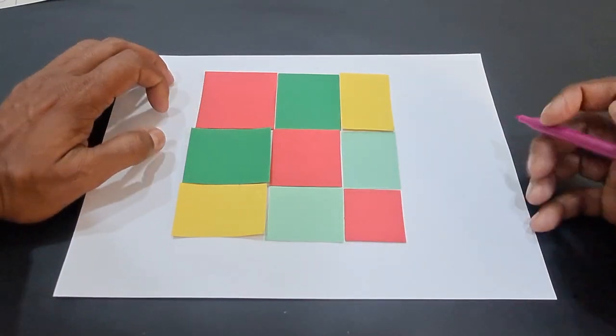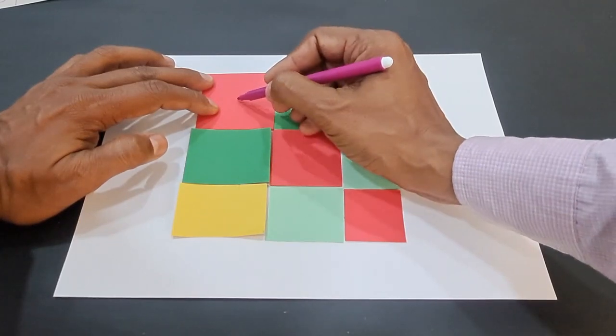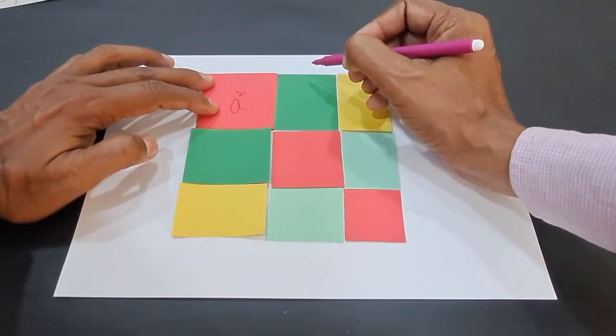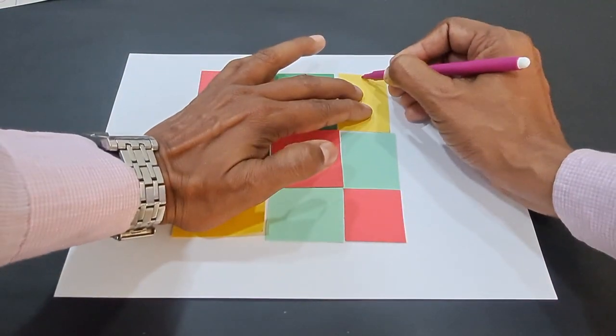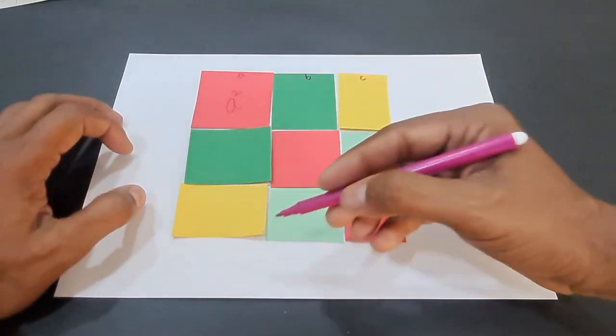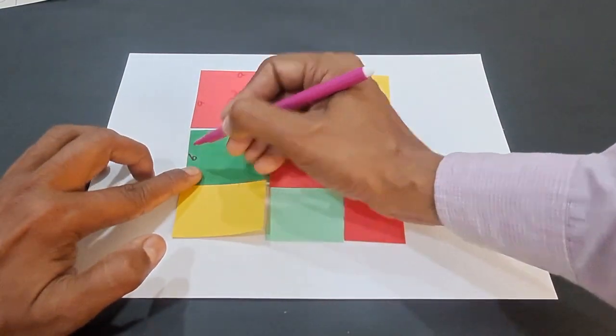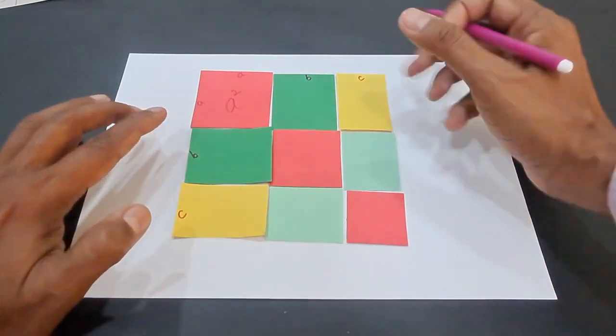So if you consider the side of this square as A, then this square has area A². If you consider this as A, this as B, and this as C, then along the edges you will have the same sides A, B, and C. So you can actually find the area of each of these parts.